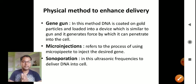In physical methods to enhance delivery: gene gun method - DNA is coated on gold particles and loaded into a device similar to a gun which generates force to penetrate into the cell. Microinjection refers to the process of using a micropipette to inject the desired gene. In sonoporation, ultrasonic frequencies are used to deliver DNA into cells.